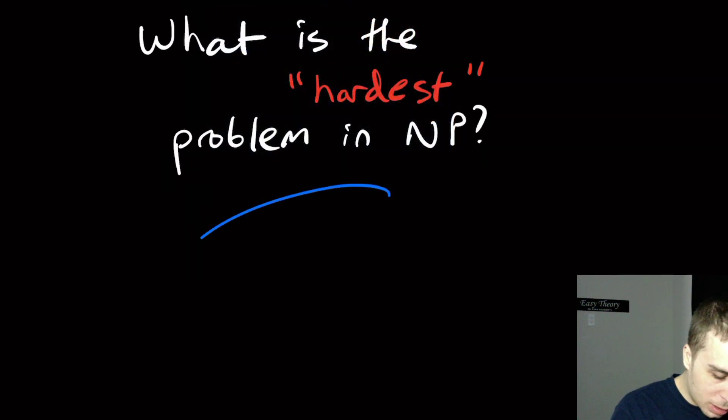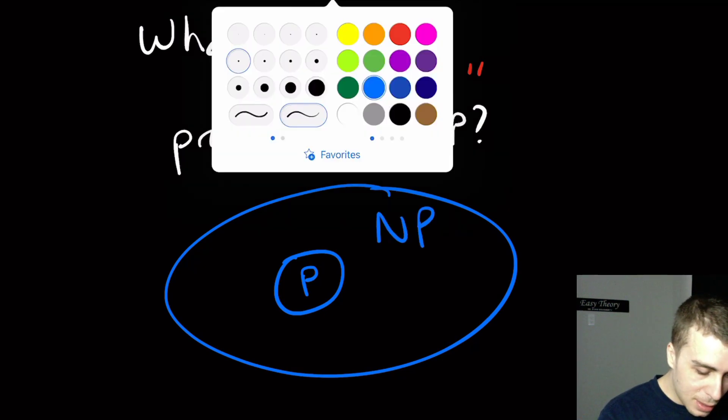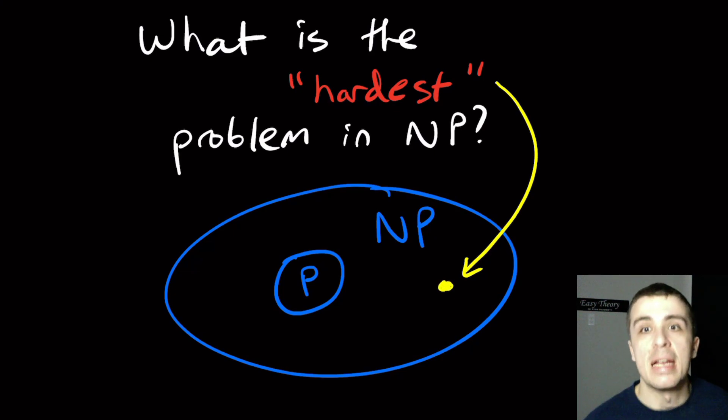So assuming the world looks like this, where the problems in P are right here and NP is right here, then the hardest problem would be some element right here. It's something in NP but also not in P. If I picked any other one it may or may not be in P, we don't know for sure, but if I find the hardest one then it certainly makes sense that it would be in NP but not in P. So what is a way of figuring out or a definition for what such a hardest problem might look like?